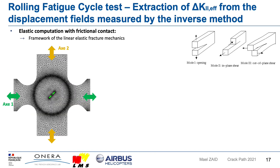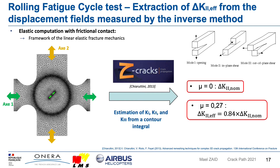From an elastic computation with frictional contact using the apparent friction coefficient determined previously, and thanks to the software Z-Cracks, we are able to estimate the stress intensity factor from a contour integral. For a given crack length, this inverse method allows us to obtain a value of apparent friction coefficient, which then allows us to calculate the effective stress intensity factor in mode 2.